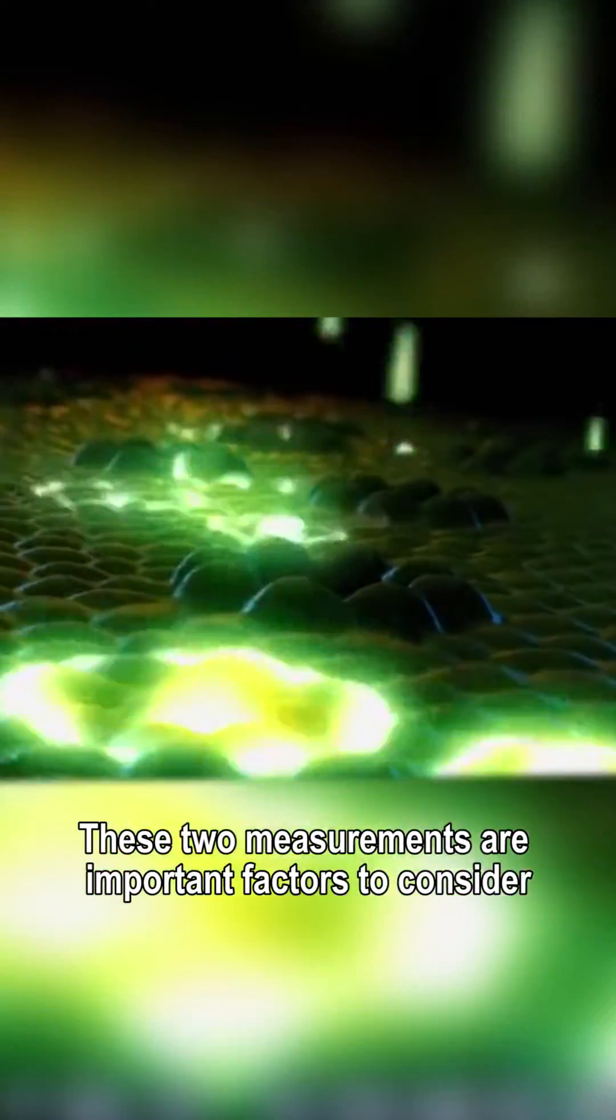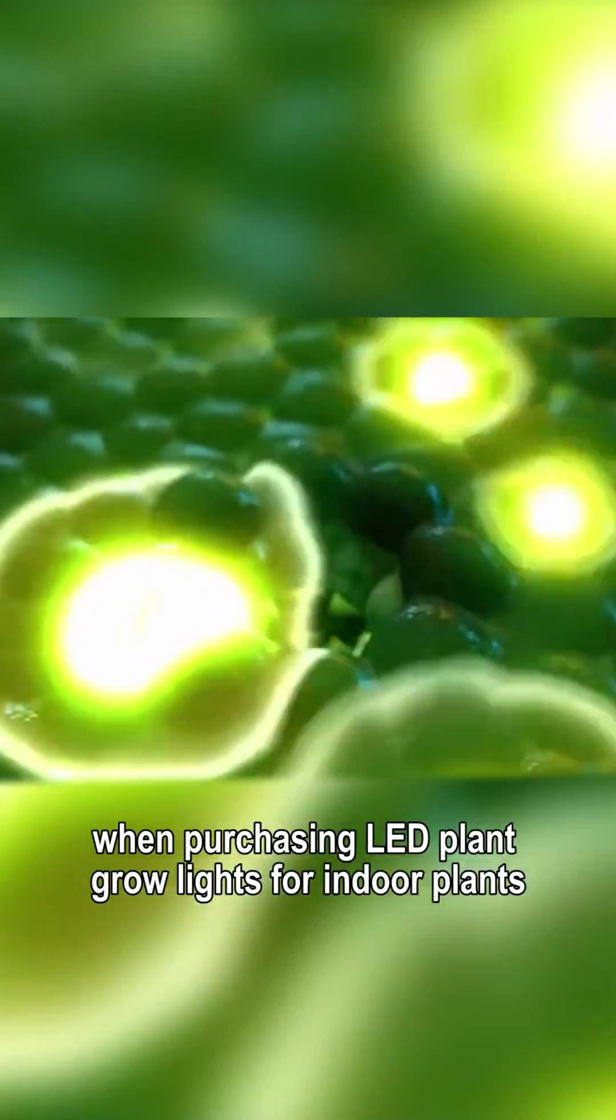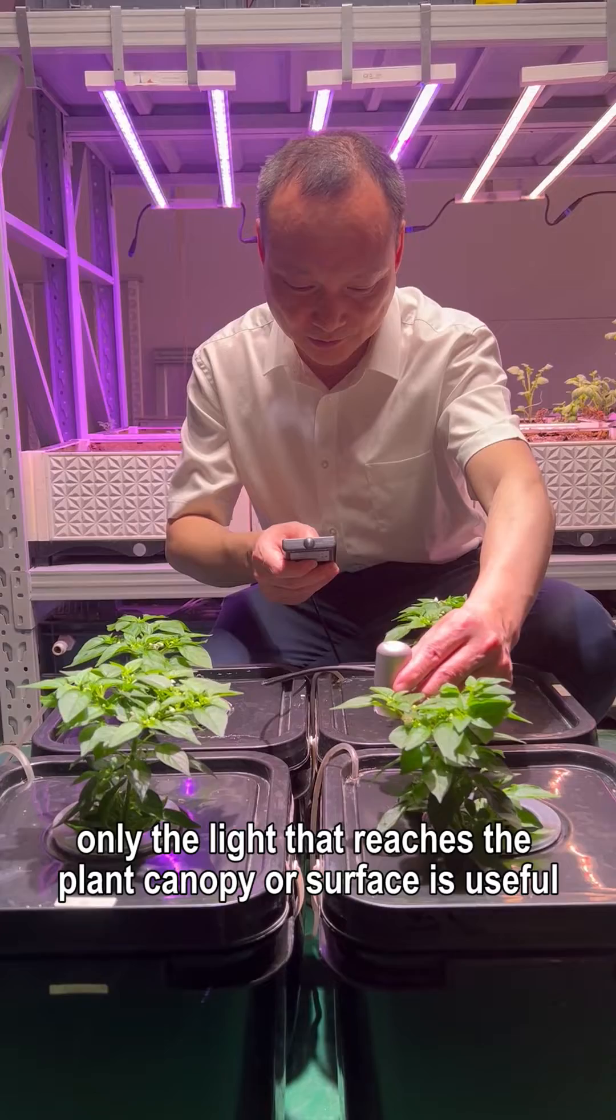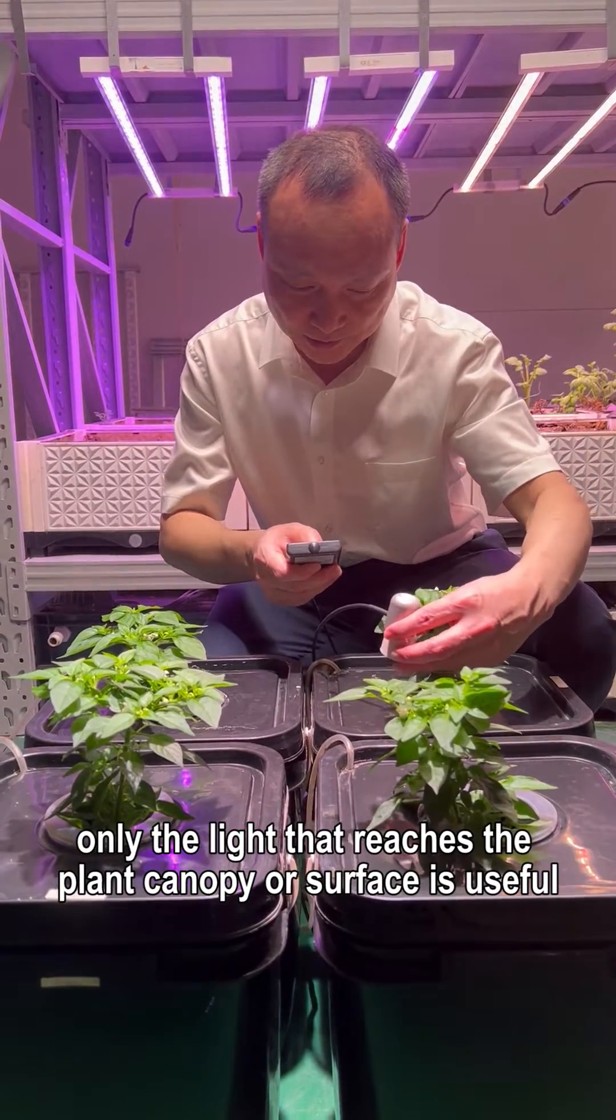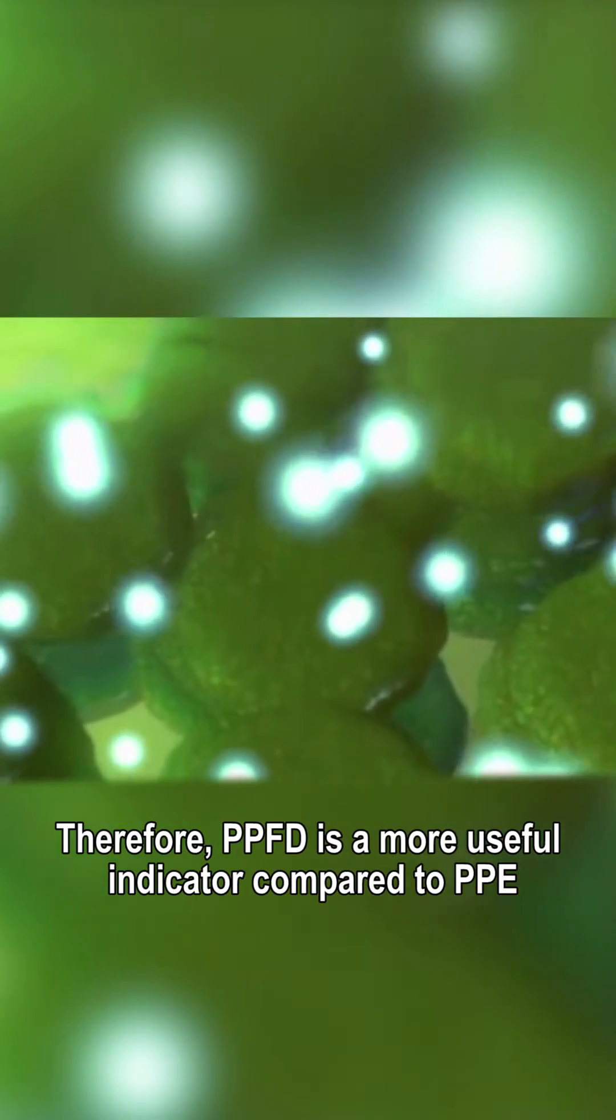These two measurements are important factors to consider when purchasing LED plant grow lights for indoor plants. In practical applications, only the light that reaches the plant canopy or surface is useful. Therefore, PPFD is a more useful indicator compared to PPE.